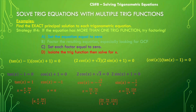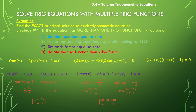For cot x · (tan x − 1) = 0, we set each factor equal to zero. Cot x = 0 means x/y = 0, so we're looking for where the x coordinate equals 0, giving π/2 and 3π/2. Tan x = 1 means we're looking for where x and y coordinates are the same, giving π/4 and 5π/4.